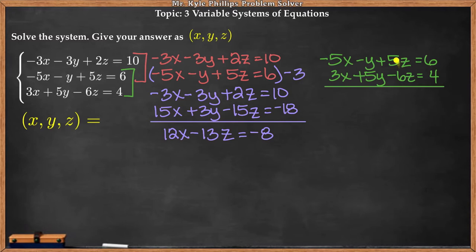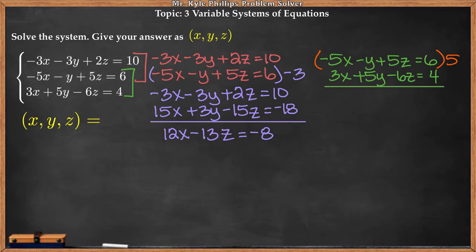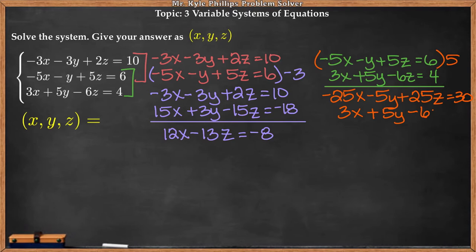And I have 3x plus 5y minus 6z equals 4. Now, looking at these two, don't try to eliminate any other variable than the one you did in the first pair. Because I eliminated y there, I must eliminate y here as well — the goal is to get two equations with the same two variables so that substitution or elimination will work. So I'll multiply the top equation by 5, giving me negative 25x minus 5y plus 25z equals 30, and the bottom stays the same: 3x plus 5y minus 6z equals 4.